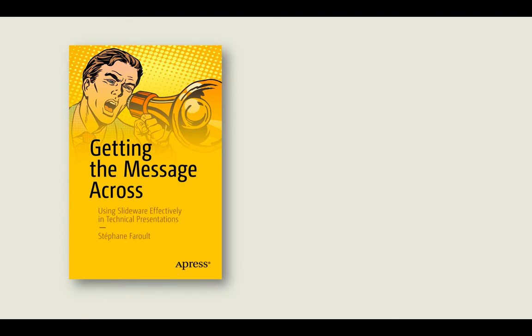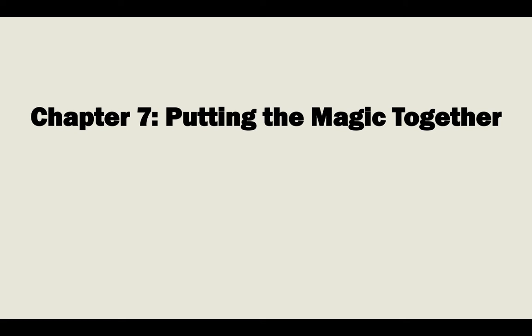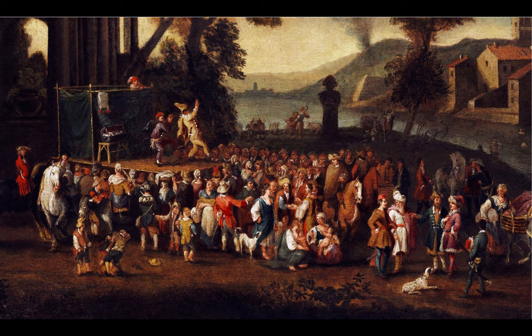Hi, I'm Stéphane Faroult, and this is the seventh and last installment in my video overview of my book Getting the Message Across, How to Use Presentation Software such as PowerPoint to Give Interesting Technical Presentations. Chapter 7, entitled Putting the Magic Together, shows how to combine transitions and animations to obtain a really fluid presentation. The best way to illustrate it is with one of the non-technical case studies in the book, in which I present some stock characters from Commedia dell'arte, a masked and mostly improvised form of popular theatre, born in Italy in the 16th century.